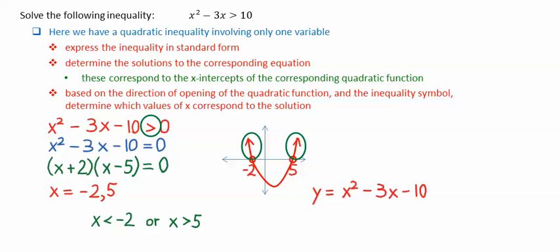We then have the solution x less than negative 2 or x greater than 5, remembering we must use the word OR as our modifier instead of the word AND.